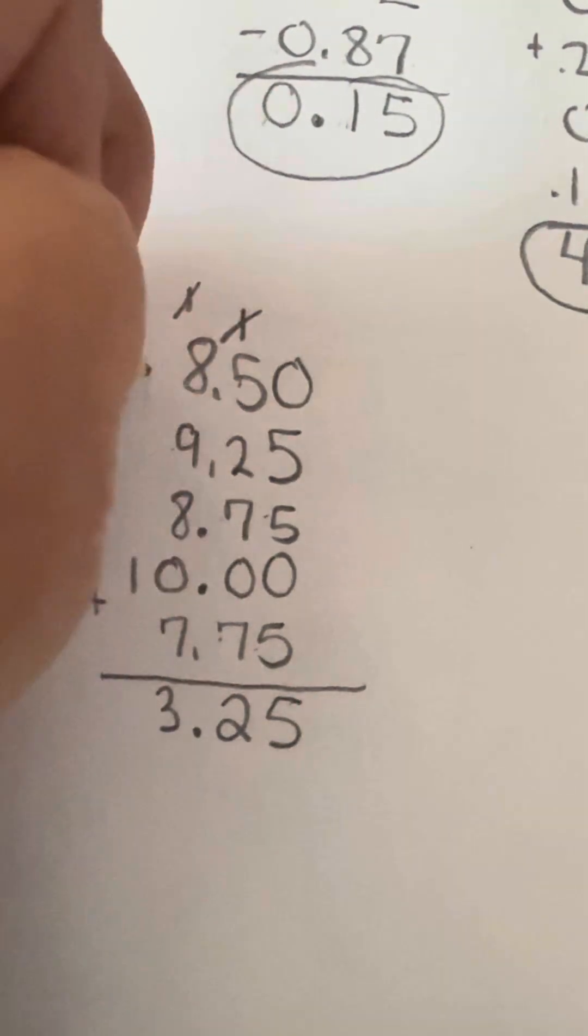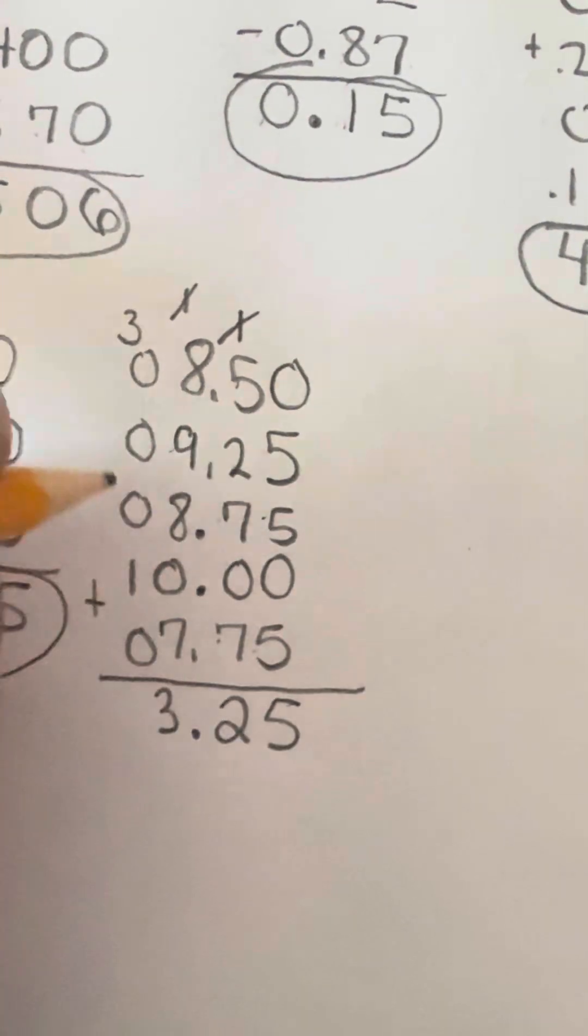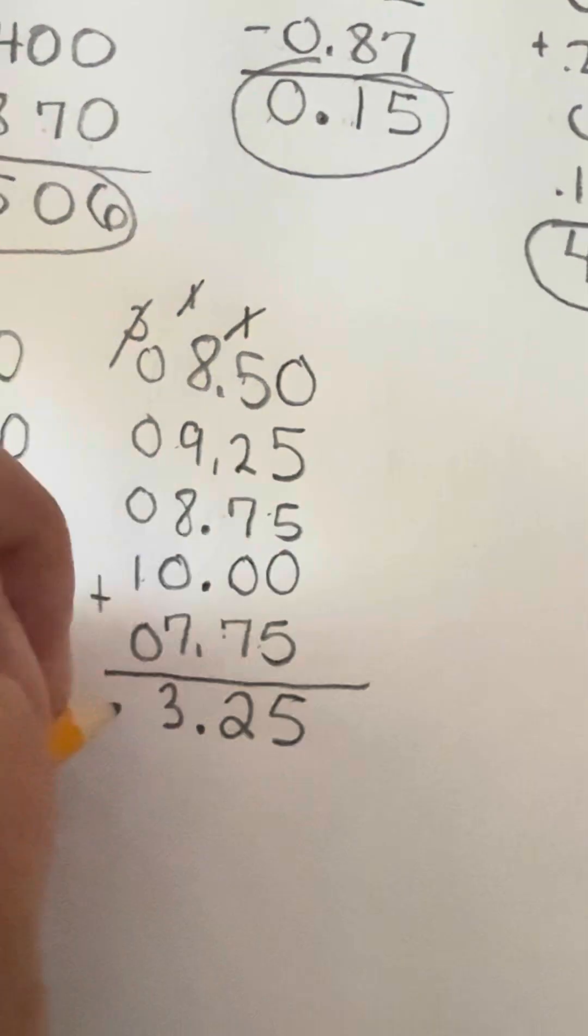And then there's nothing in any of these spots. I didn't fill them in. I should have filled them all in with zeros here. So we're going to have 3 plus 1, which is 4.